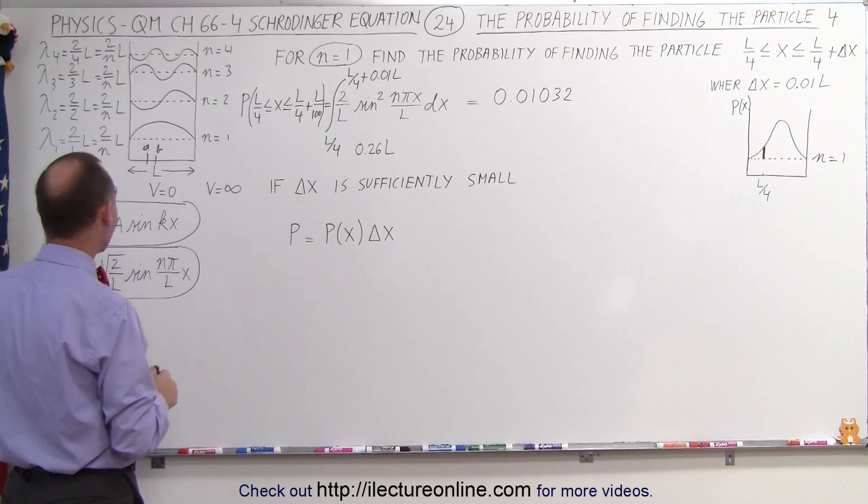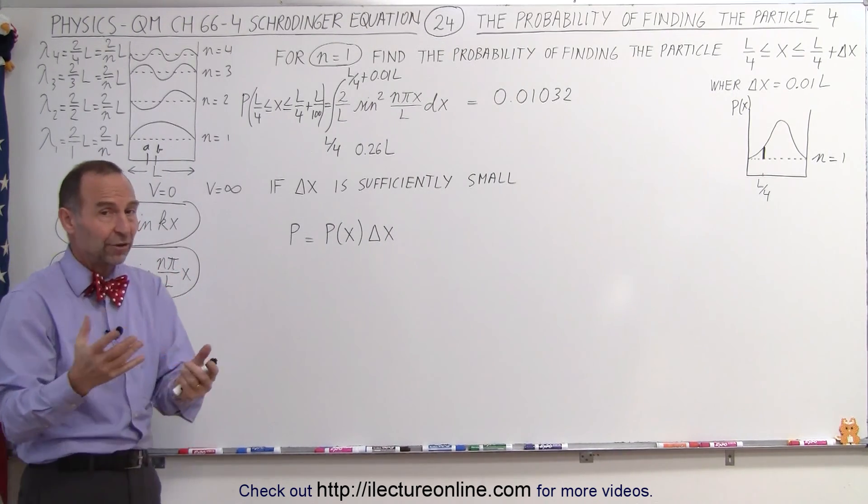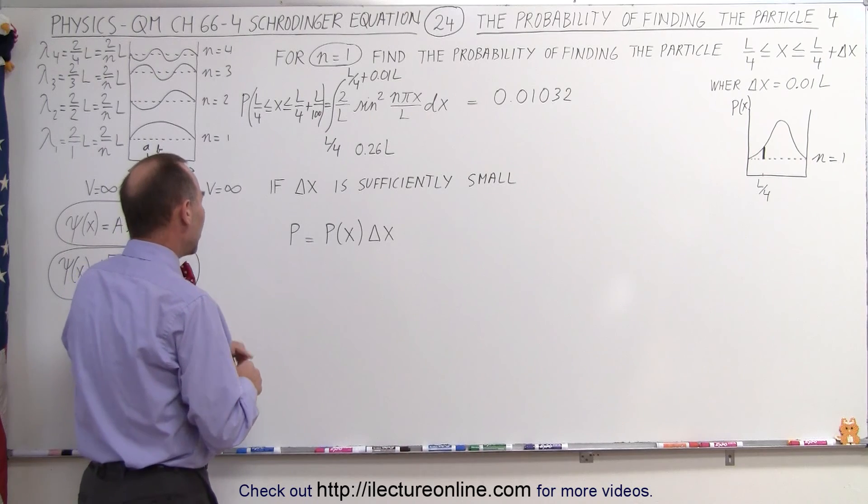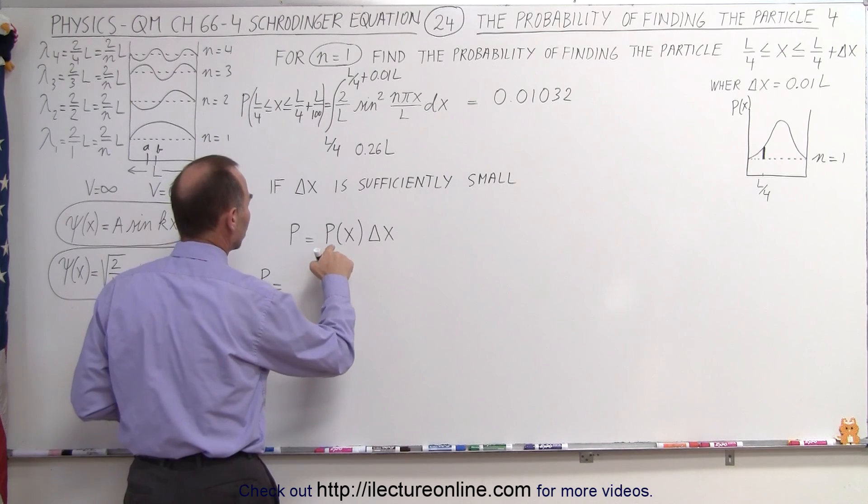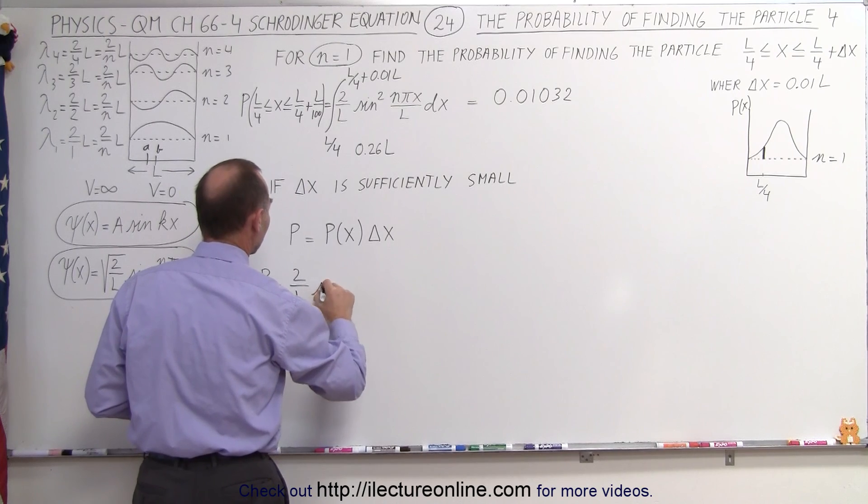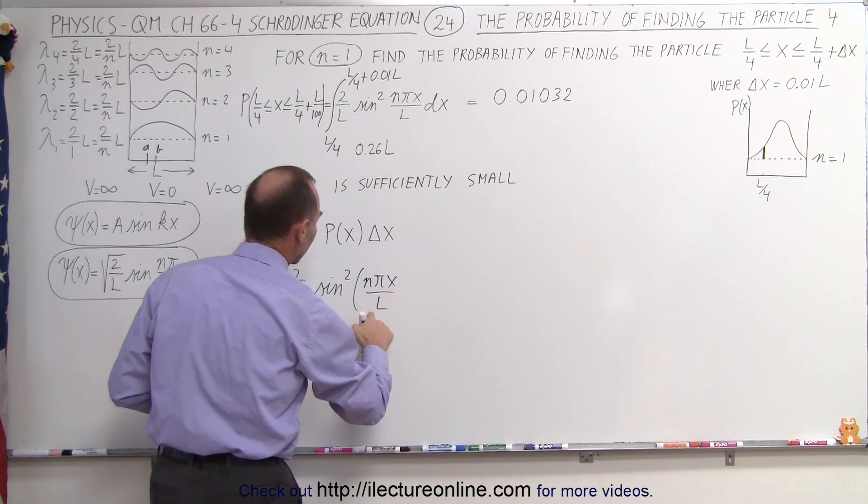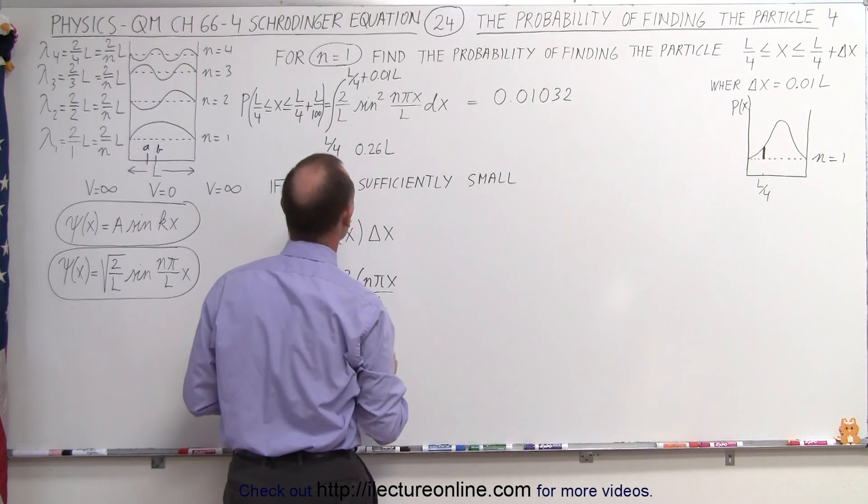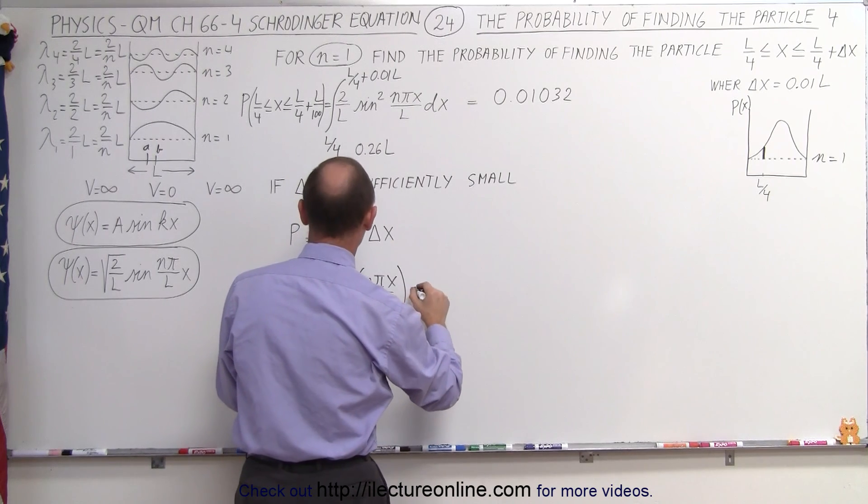So what we're going to do here is replace the probability function by the wave function squared. Again, in this case, since the wave function doesn't have a complex component in it, we can simply take the wave function squared. So the probability is going to be equal to the probability function, which is this quantity right here, 2 over L times the sine squared of n pi x over L. Realizing again, we're using n equals 1, we're going to calculate it for the innermost energy level or the lowest energy level. So that's the wave function squared multiplied times delta x.